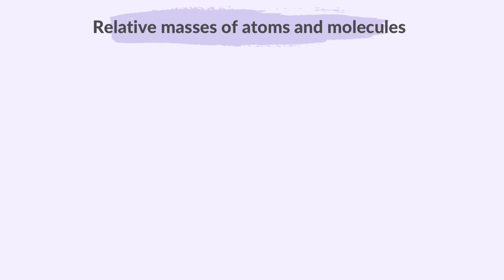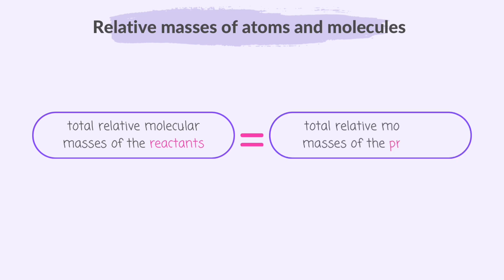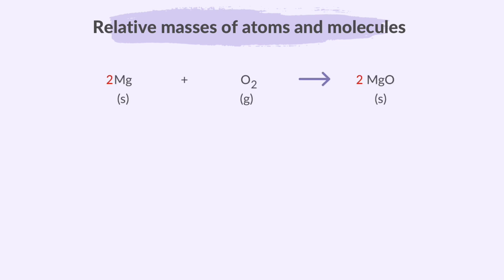In a reaction, when you add up the total relative molecular mass of reactants, it must be equal to the total relative molecular masses of the products. Let's test this. First, you must write the balanced equation. For the relative atomic mass of each element, just take it from the periodic table.